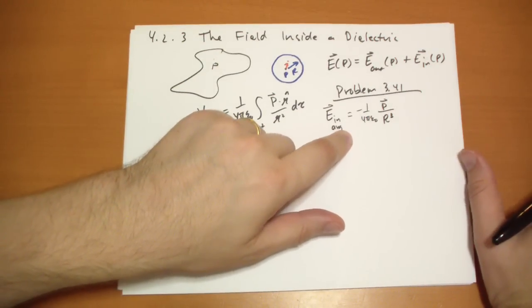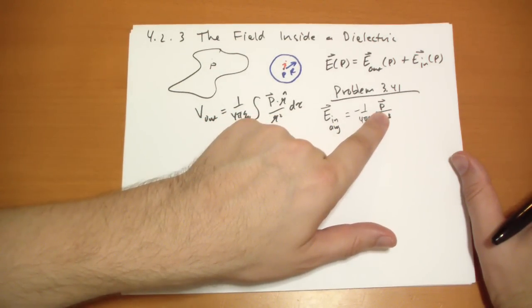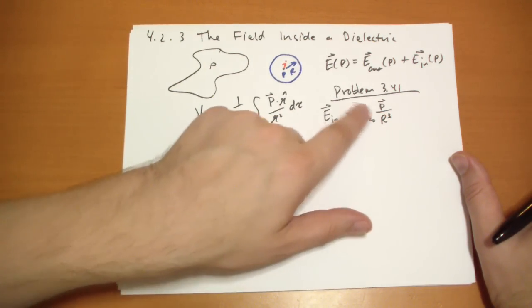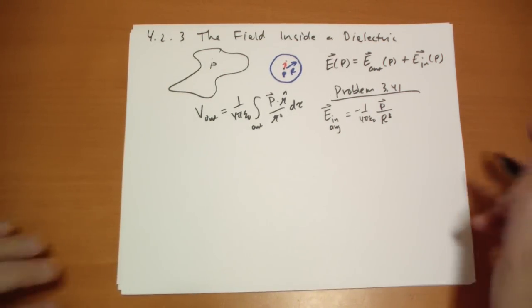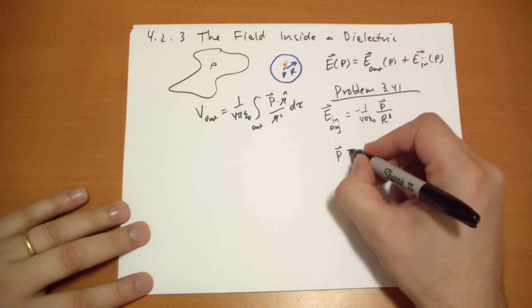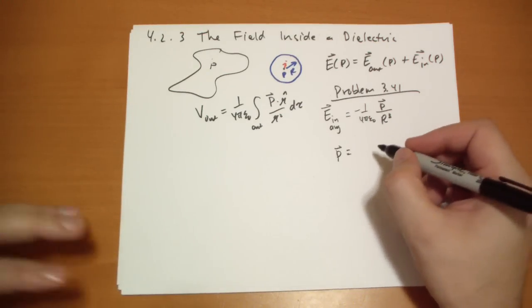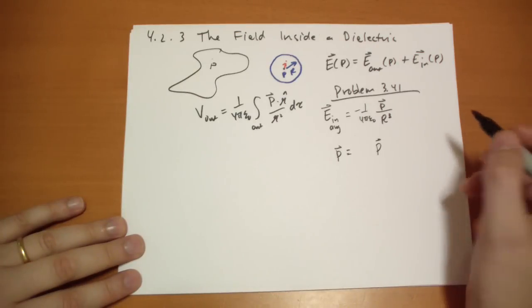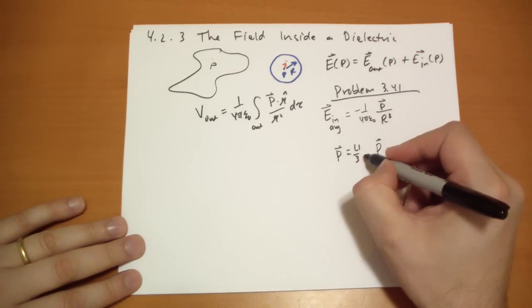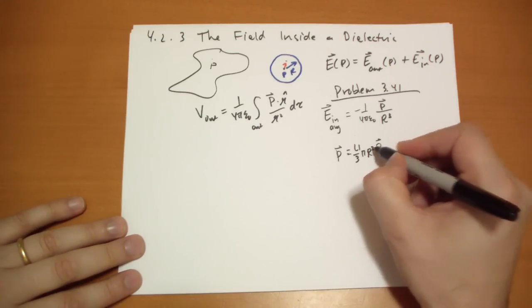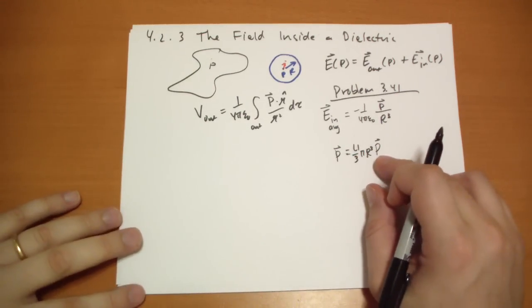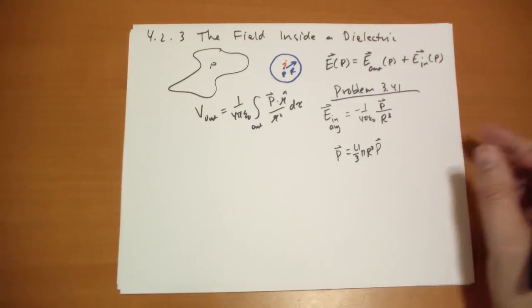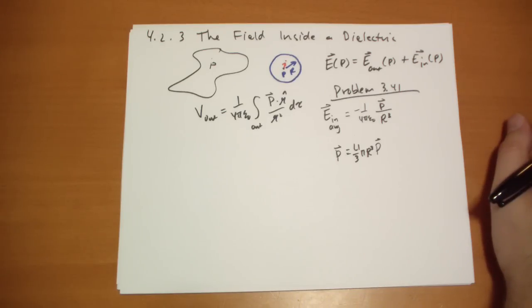So the inside is basically just the total dipole moment times the stuff. Which we can rewrite the total dipole moment as that's just going to be the polarization of that material big P times the volume. The total dipole moment is the polarization times the volume because polarization is the dipole moment per unit volume.